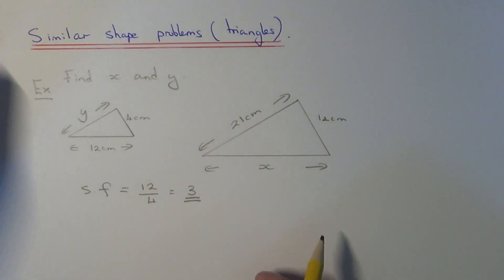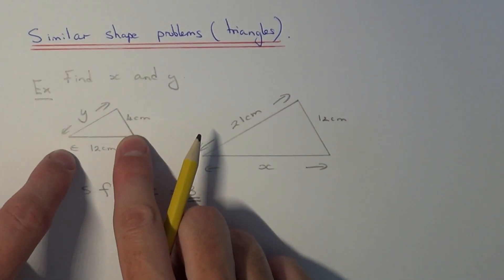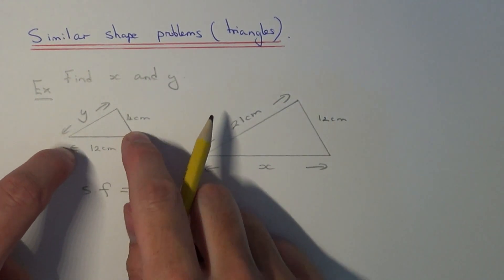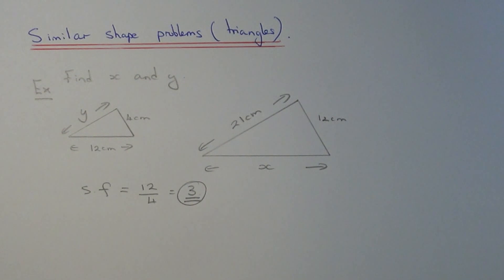So all the sides on this triangle here are 3 times as big as the sides on the little triangle. So we just need to now use this scale factor then to work out side lengths x and y.